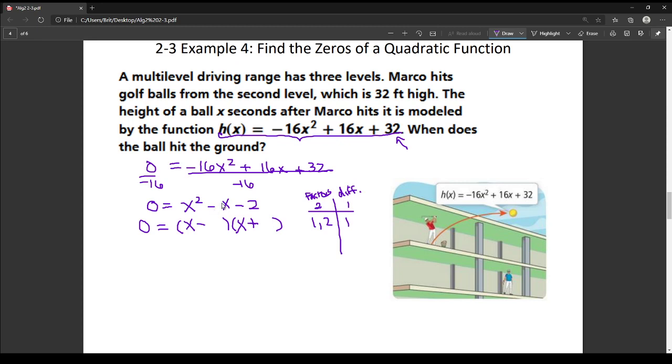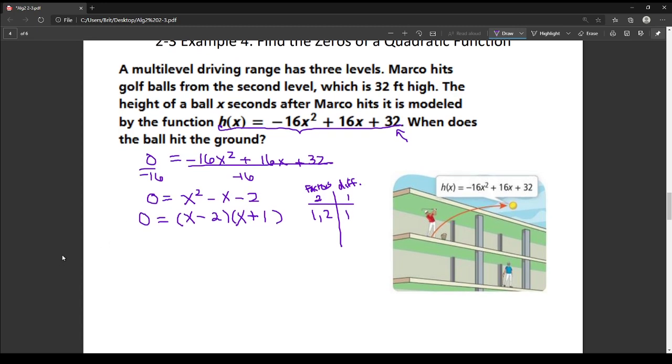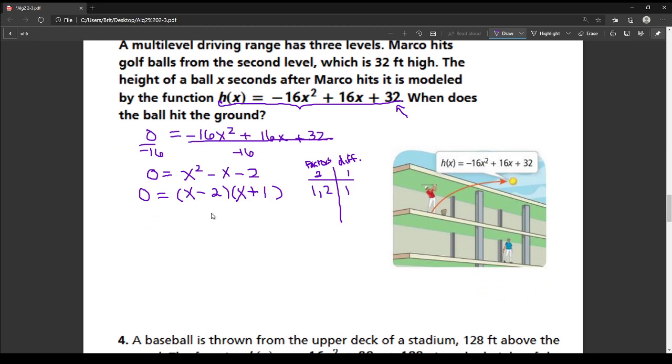Now remember, your b value here is a negative, so your bigger number has to be negative. So I'm going to put the 2 where that minus is, and then the 1 where the non-minus is. And so now I'm going to solve, because I need to find the zeros. If I have this golf ball traveling like this, this point, this zero, is where it's hitting the ground, and that's going to tell me the amount of time that it was in the air.